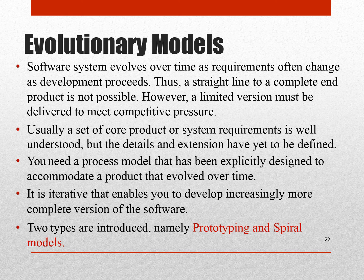The next is the evolutionary model. Software systems evolve over time as requirements often change as development proceeds. Thus, a straight line to a complete end product is not possible. However, a limited version must be delivered to meet competitive pressure. Usually a set of core product or system requirements is well understood, but the details and extensions have to be defined. You need a process model that has been explicitly designed to accommodate a product that evolves over time. It is iterative, enabling you to develop increasingly more complete versions of the software.